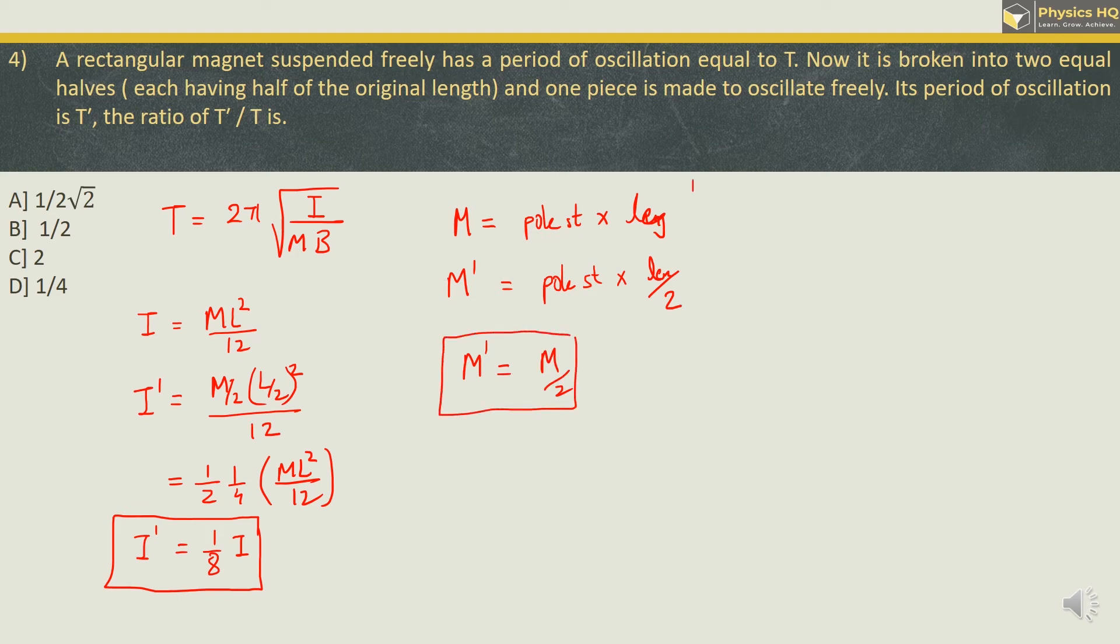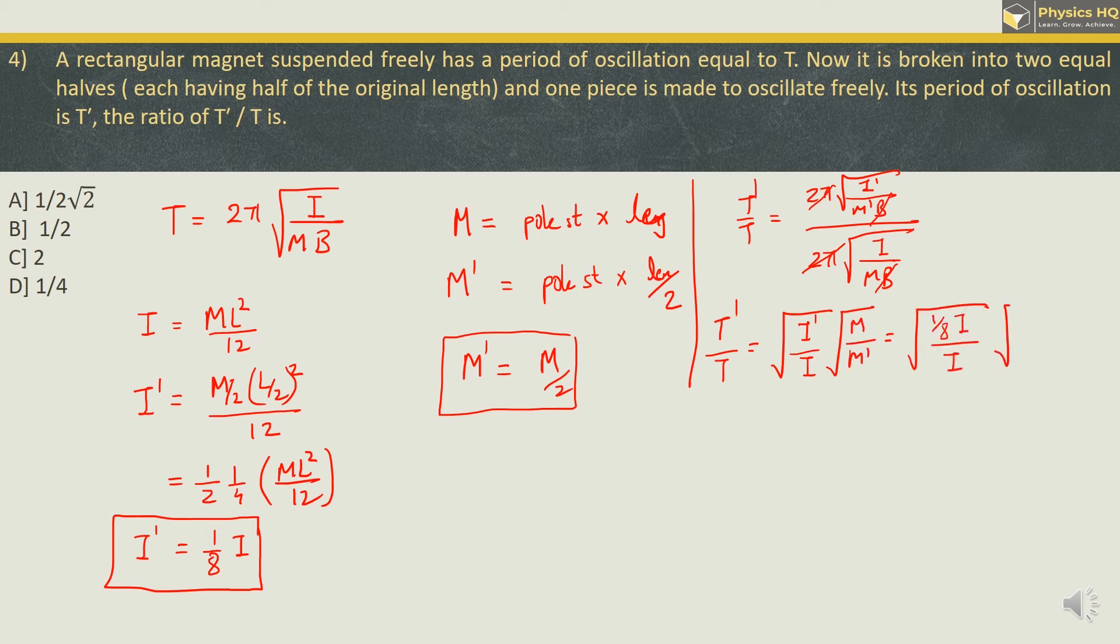Now let us take the ratio of T' by T. We will have 2 pi root of I' by M' B divided by 2 pi I by M B. Now B is the magnetic field which is constant and 2 pi are constant. We will cancel them out. So we will have T' / T is equal to root of I' / I and root of M / M'. I' can be written as 1/8 I and M' can be written as M/2.